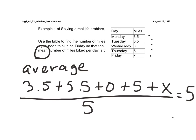So now, we're going to simplify this. We're going to add the top, and we have 3.5 plus 5.5, which would be 9, plus 5 is 14. So we have 14 plus x, all over 5, is equal to 5.